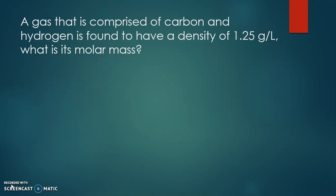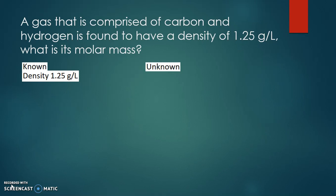Finally, we have a gas made up of carbon and hydrogen with a density of 1.25 grams per liter. We want to find its molar mass. We can't find it the regular way by counting atoms, but we can use its density. We know the density is 1.25 grams per liter, and we don't know the molar mass in grams per mole. We also know any gas has a volume of 22.4 liters at standard temperature and pressure.